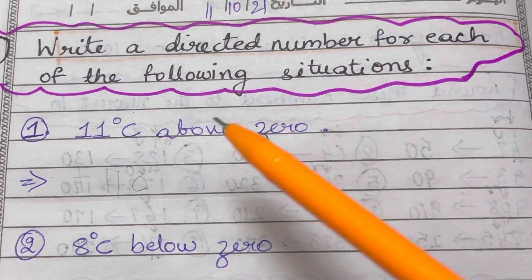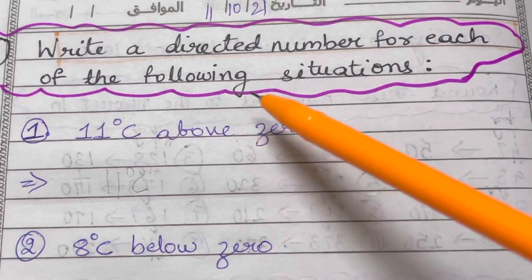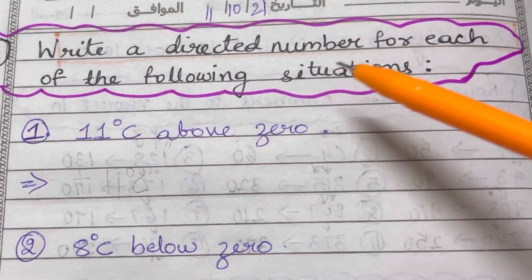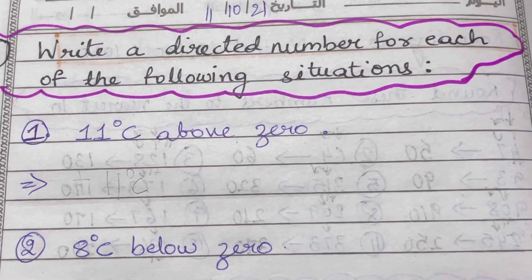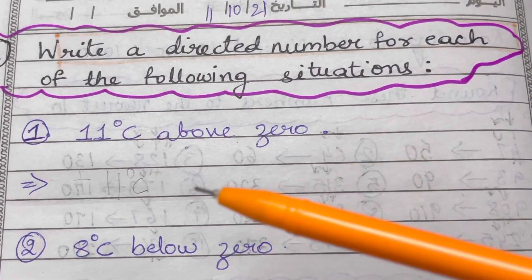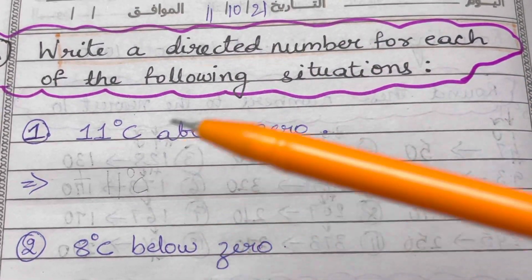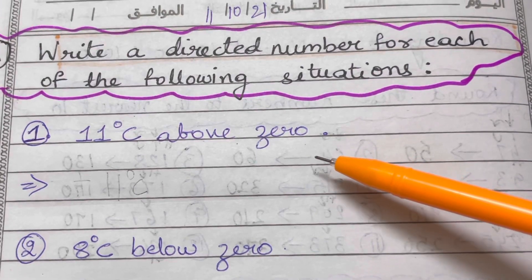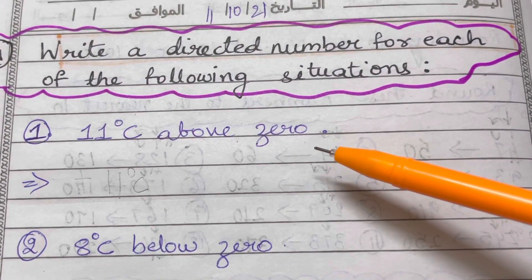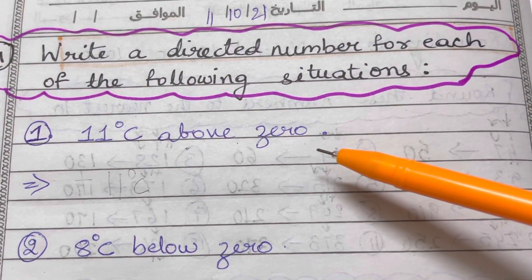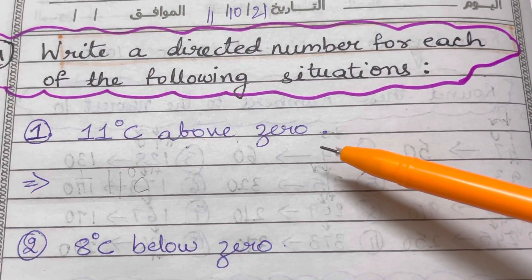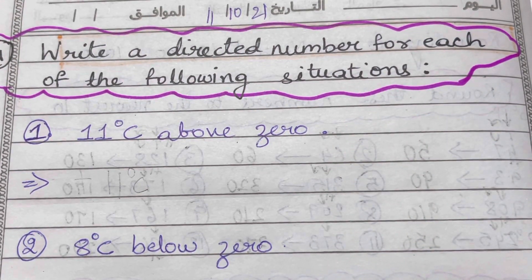Alright, let's learn what are directed numbers. Write a directed number for each of the following situations. Directed numbers basically have both size and direction - that is, they have positive as well as negative values. Where do we find positive and negative numbers both? In integers. So they are just the integers, and you can find them in temperatures.